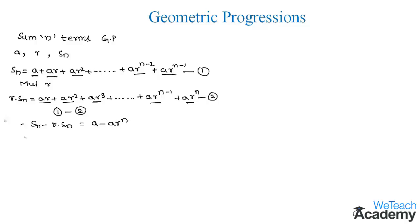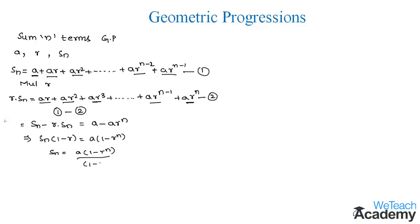Only the first term a from equation 1 and the last term ar to the power n from equation 2 remain. So we get a minus ar to the power n. On the left-hand side, taking Sn as a common factor, we get Sn into 1 minus r equals a into 1 minus r to the power n. Transferring 1 minus r to the other side, the formula for the sum of n terms of a geometric progression is: Sn equals a into 1 minus r to the power n, divided by 1 minus r.